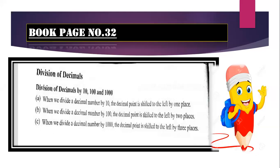If you remember yesterday's topic, we read that we shift the decimal to the right. Now in division, when we divide a decimal number by 10, the decimal point is shifted to the left by one place. It is shifted to the left by two places when dividing by 100. When we divide a decimal by 1000, we shift that point to the left by three decimal places.